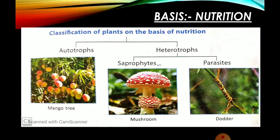Then we are coming on the basis of nutrition. Nutrition means वो कैसे अपना खाना लेते हैं। अगर खाना कैसे लेते हैं वो देखें तो mainly two categories हैं — autotrophs and heterotrophs. Auto means self, trophs means nutrition — जो अपना खाना खुद बनाते हैं, self nutrition करते हैं, वो होते हैं autotrophs. Hetero means others, trophs means nutrition — जो अपने food के लिए दूसरों पर dependent रहते हैं उनको बोलते हैं heterotrophs.